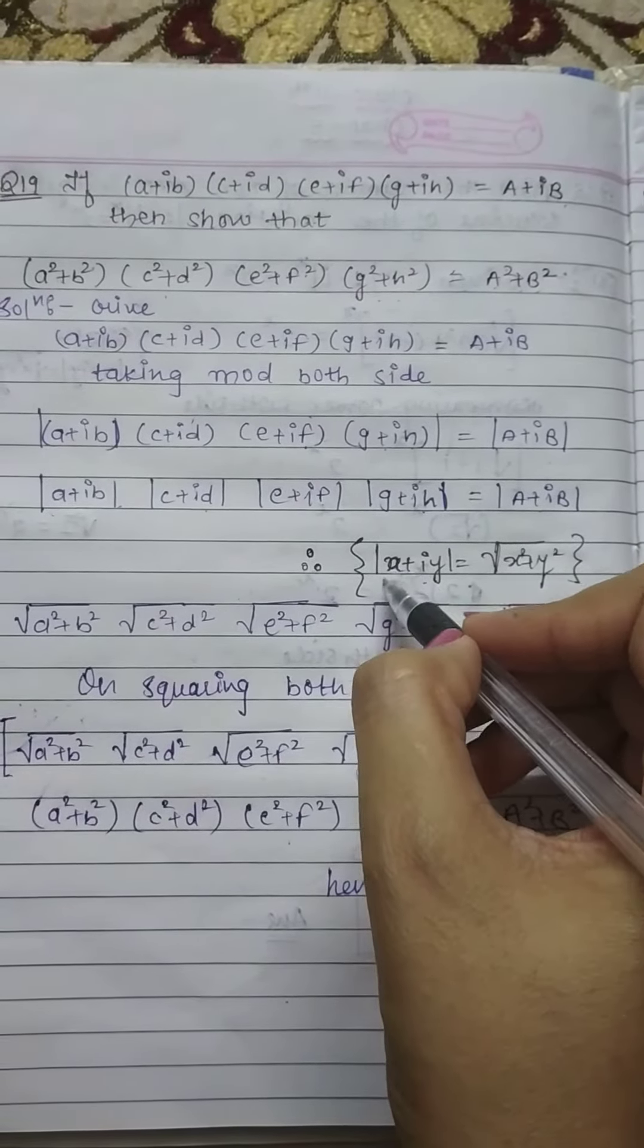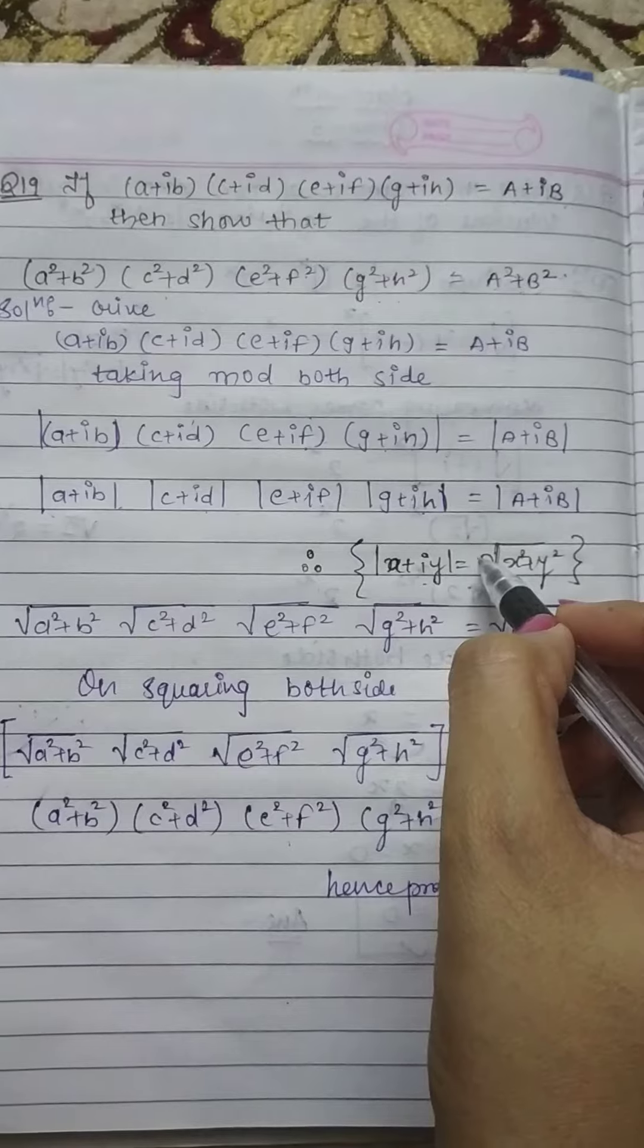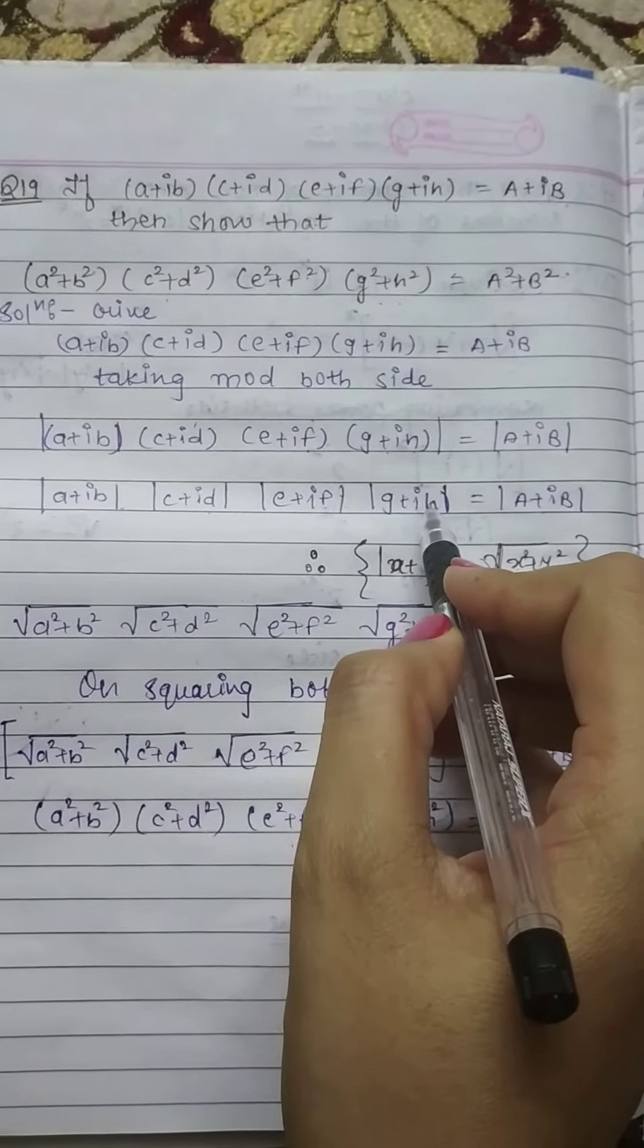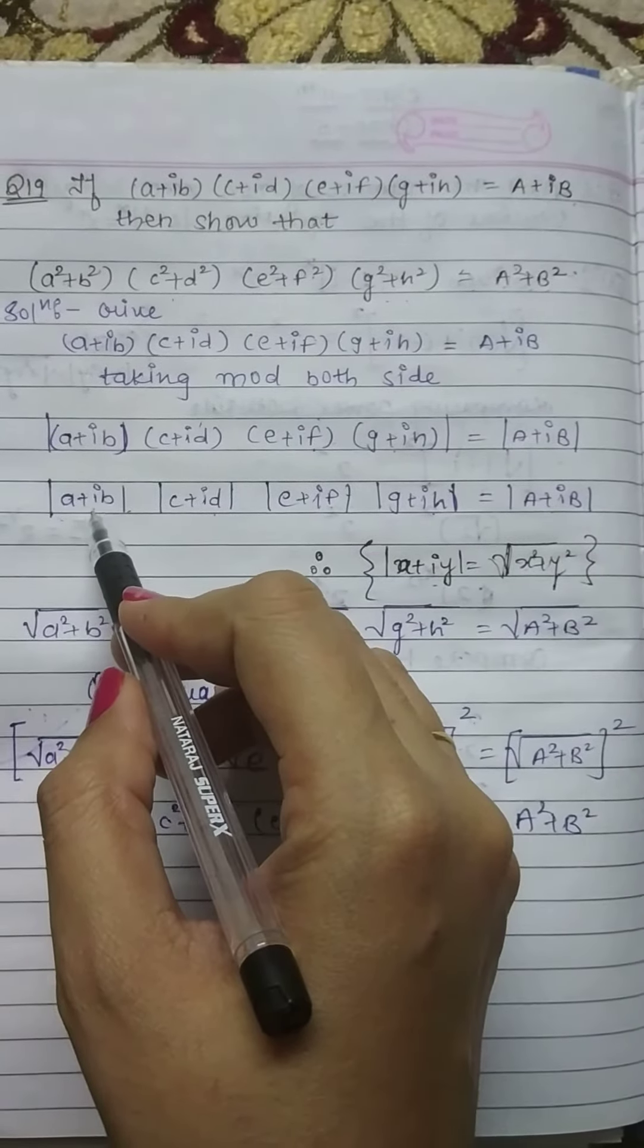Now if we have modulus of X+iY, then what do we write? Under root of real part square plus imaginary part square. So here we have modulus on left side.